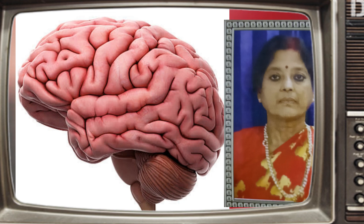An acronym is a word made up by taking the first letters of all the keywords or ideas you need to remember and creating a new word from them. For example, the word SMART helps remember goal-setting as: Specific, Measurable, Attainable, Realistic, and Timely.